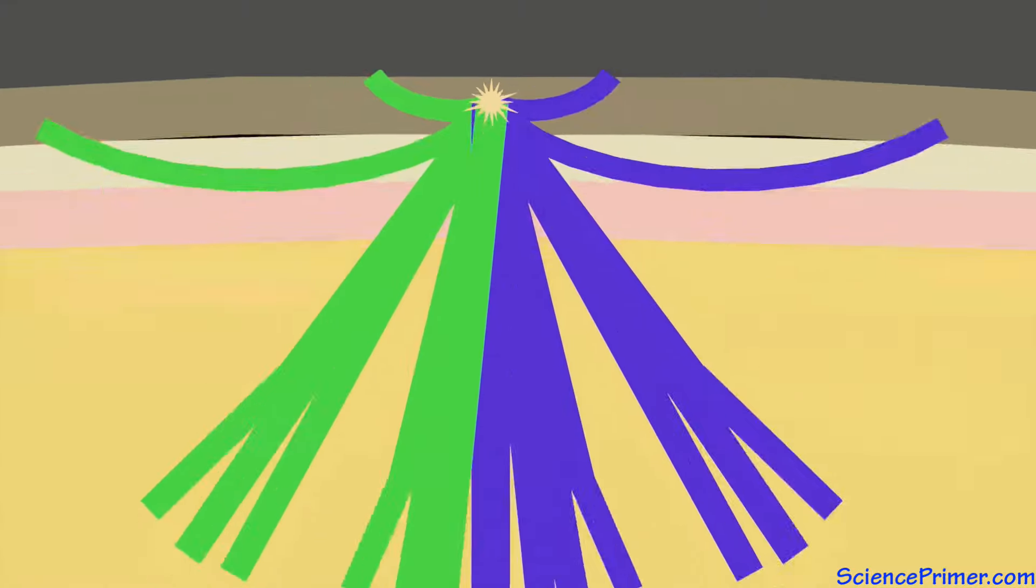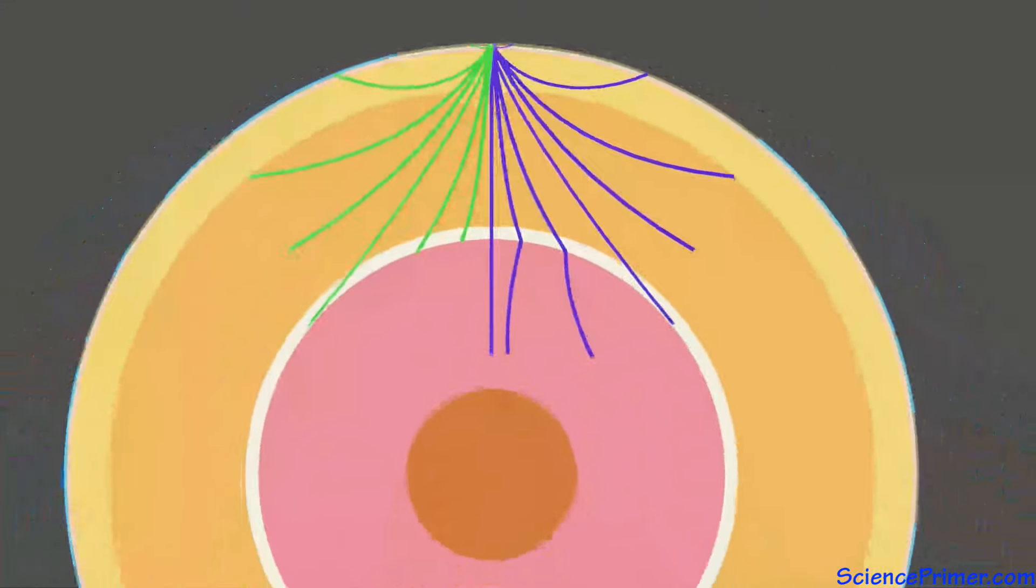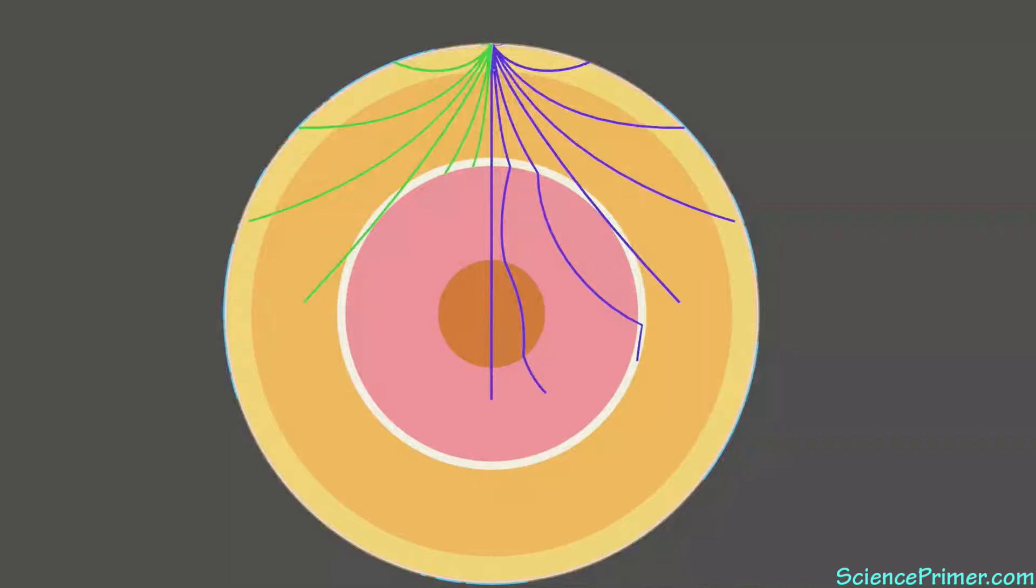The understanding of how speed, direction, and refraction patterns of P and S waves are influenced by changes in the composition, phase, temperature, and density of the material they pass through has allowed scientists to infer a great deal about the Earth's interior.